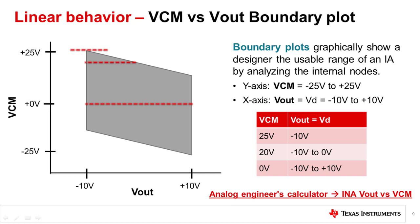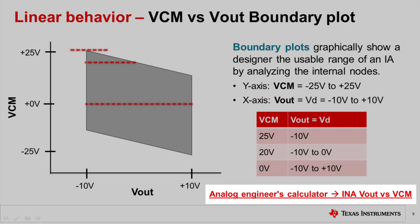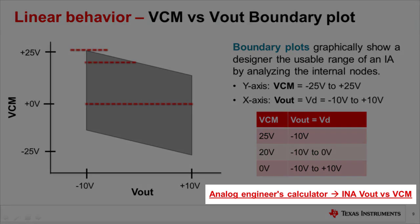Here's how you can read this plot. When VCM is equal to 25 volts, the allowable Vout and Vd is negative 10 volts. When VCM is equal to 20 volts, the allowable range of Vout and Vd is negative 10 volts to 0 volts. When VCM is equal to 0 volts, the allowable range of Vout and Vd is negative 10 volts to positive 10 volts. This plot is available with all of our IA releases through a calculator tool called Analog Engineers Calculator under INA VCM vs Vout.